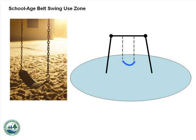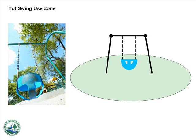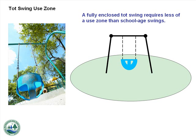School Age Belt Swing Use Zone: Swings require a much greater area for the use zone than many other aspects of the playground. The use zone should extend 2 times the height of the pivot or swing hanger in front of and behind the swing seats. The use zone should also extend 6 feet to the side of the support structure. A fully enclosed taught swing requires less of a use zone — measure the vertical distance from the bottom of the seat to the pivot point and multiply by 2 for the use zone in front of and behind the swing.